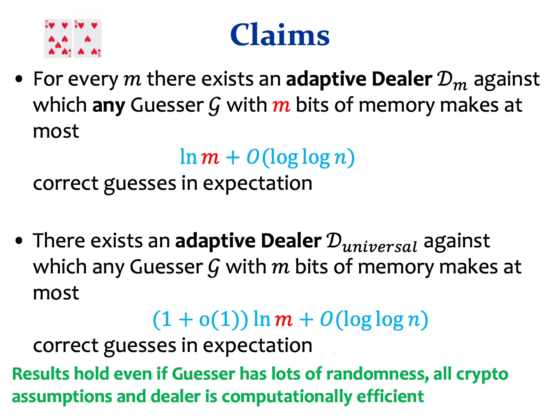The fact that these results hold even if the guesser has lots of randomness and is computationally unbounded, while the dealer is very simple and computationally efficient, emphasizes that it is the adaptivity that plays the key role here.